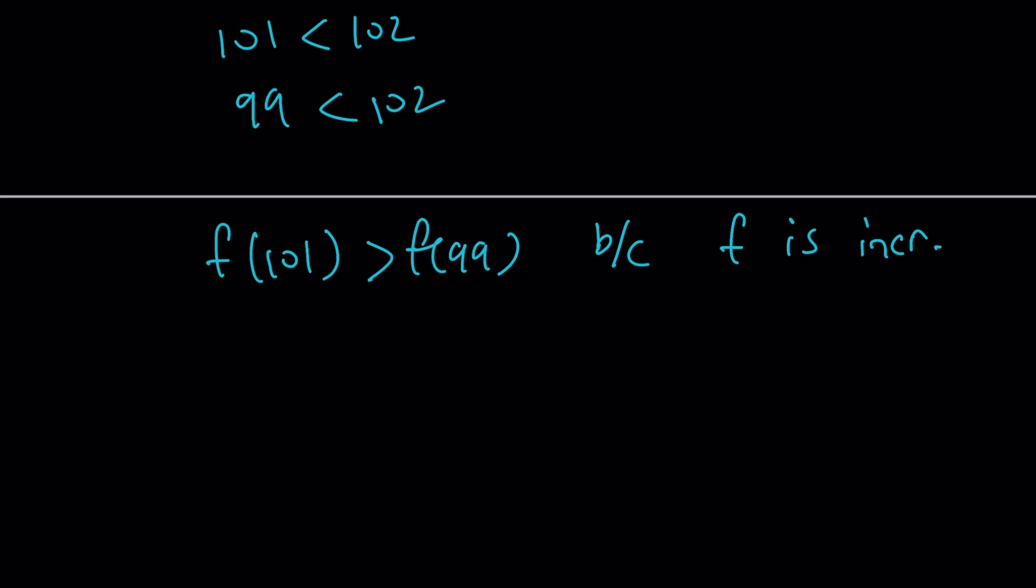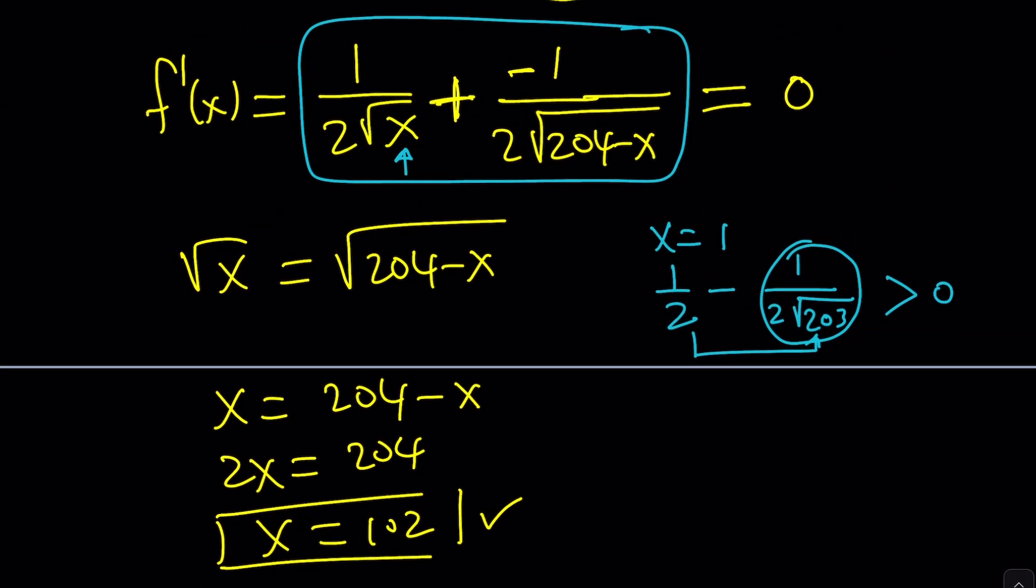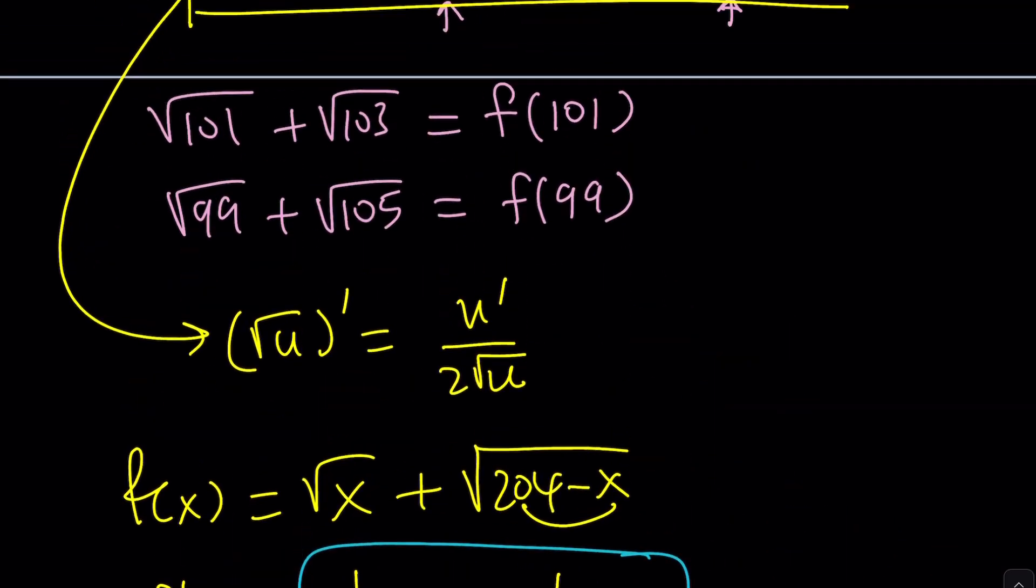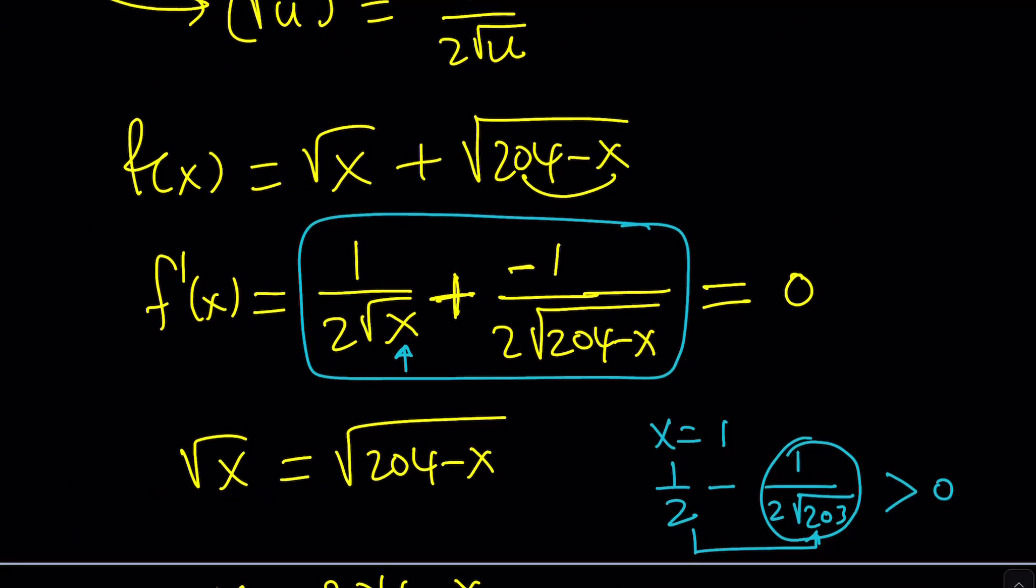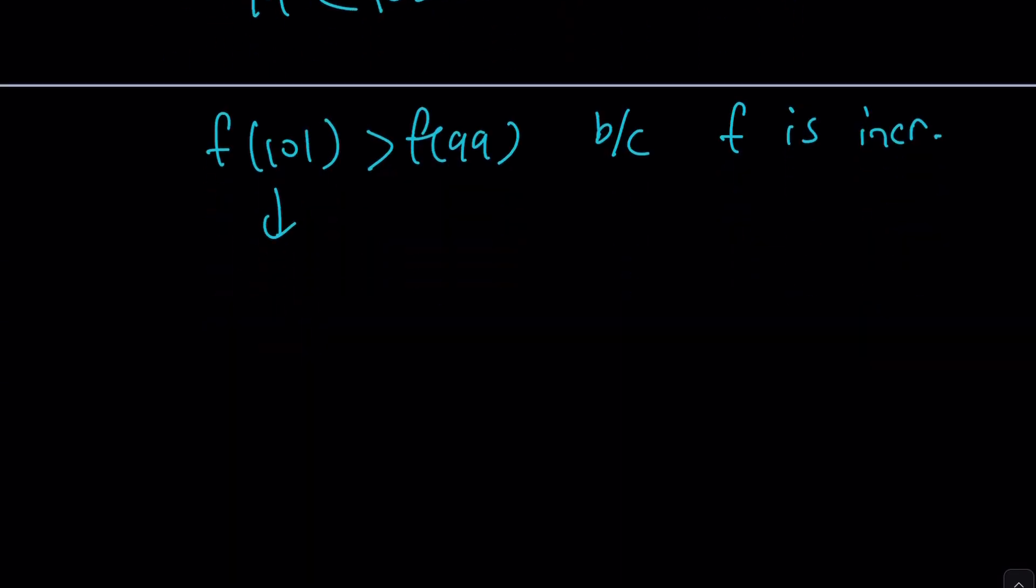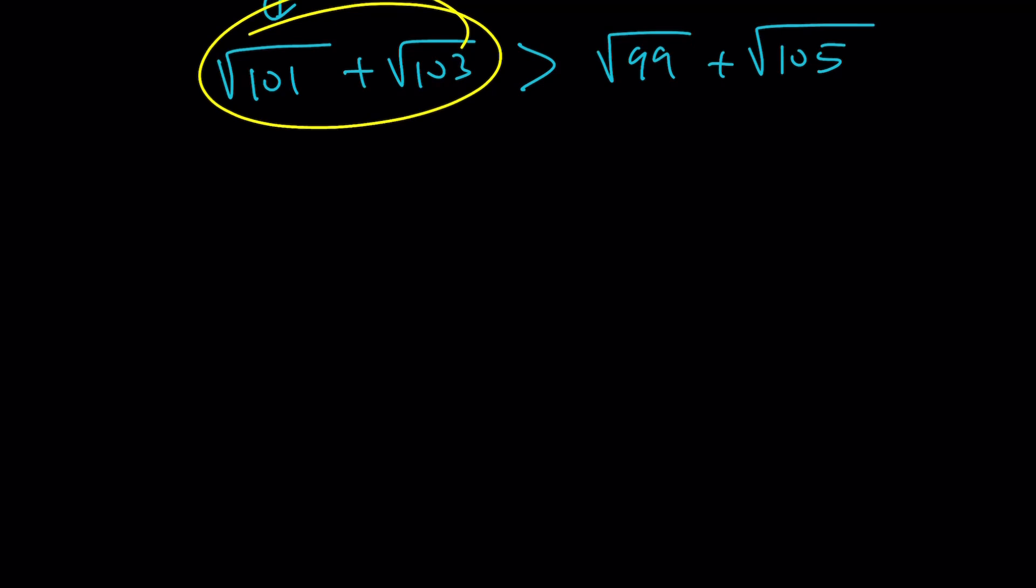From here we get the following. Remember what f of 101 was? It was the square root of 101 plus the square root of 103. So this means √101 + √103 is greater than √99 + √105. So the larger number is this one. We have a winner, but let's go ahead and take a look at the second method, because I think the second method is also very cool. You're going to decide which method you like better.